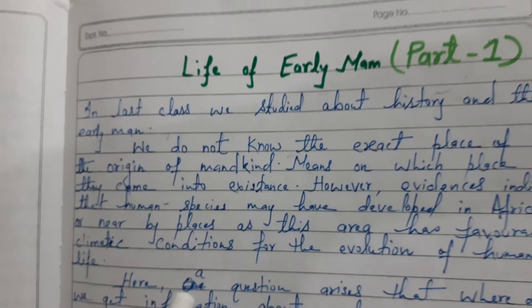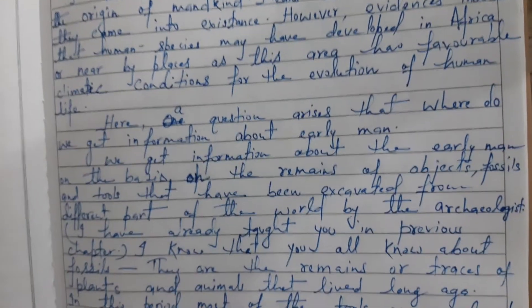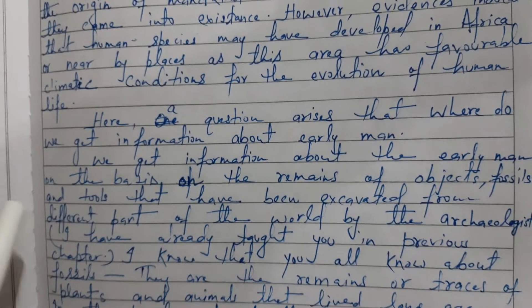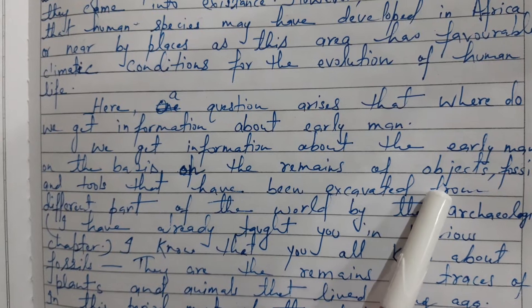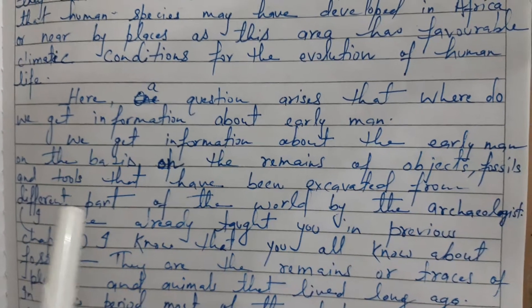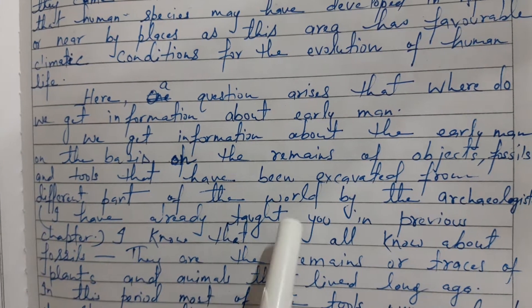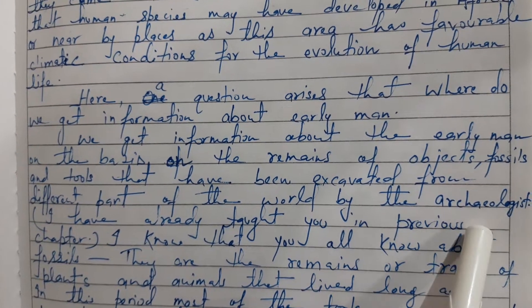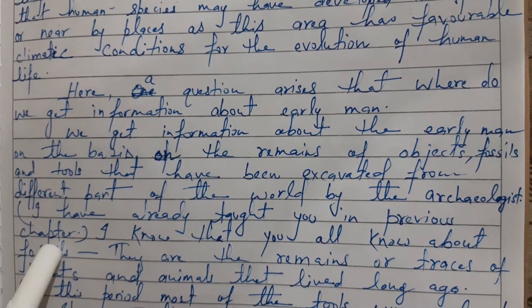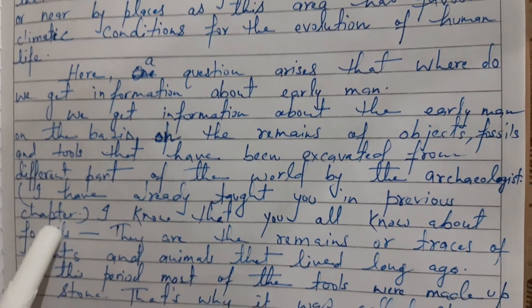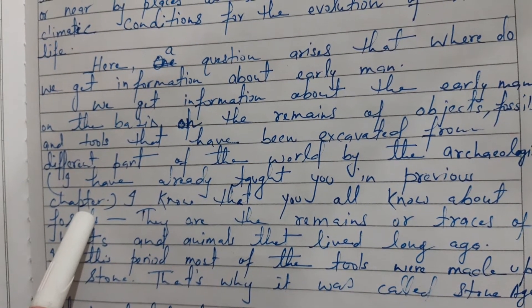A question arises: where do we get information about early man? We get information about early man on the basis of the remains of objects, fossils, and tools that have been excavated from different parts of the world by archaeologists. We already learned that we get clues from archaeological evidences and literary evidences.